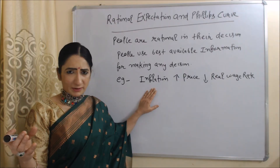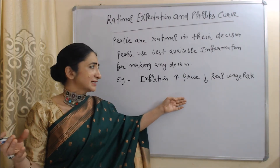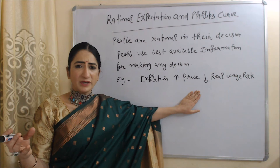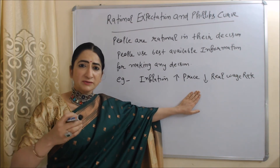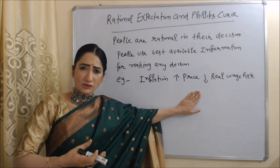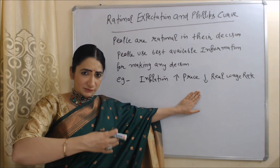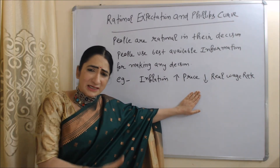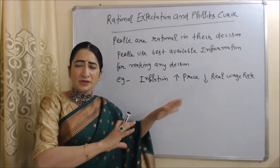Now we are going to talk about rational expectation and the Phillips curve. According to rational expectation, people are very rational in their decisions. For example, through any government policy, inflation increases, prices increase, and the real wage rate of employees falls. Now employees will immediately predict that because of inflation their real wage rate is falling, and they immediately demand a higher wage rate.